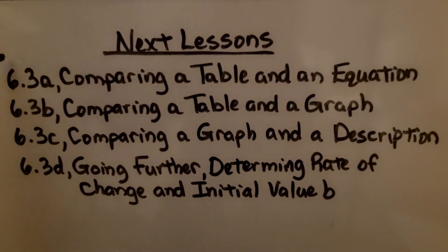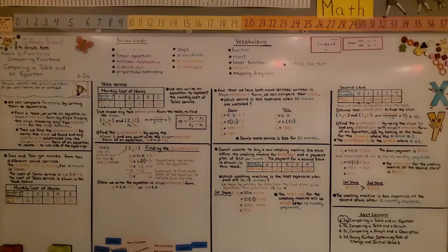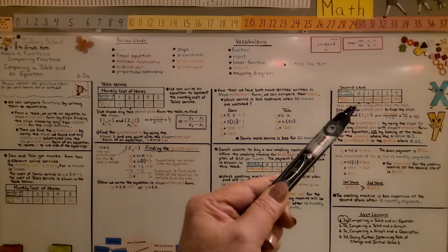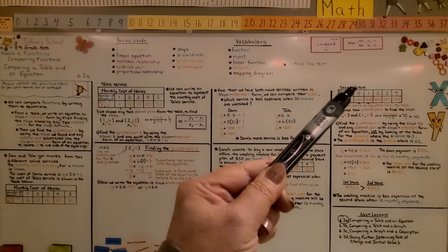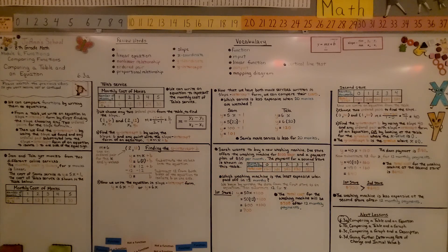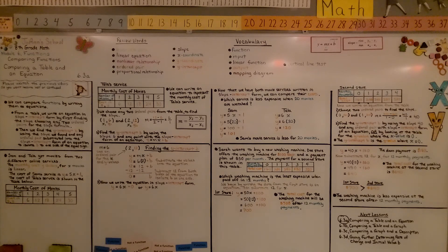We're finished with lesson 6.3a and moving on to 6.3b: comparing a table and a graph. When looking at a table, remember the y-intercept b is the y-value where x equals zero. But it's also important to know how to find the y-intercept by using the slope and any ordered pair substituted into slope-intercept form to isolate b. Have a wonderful day, and please join me for the second part of the lesson!